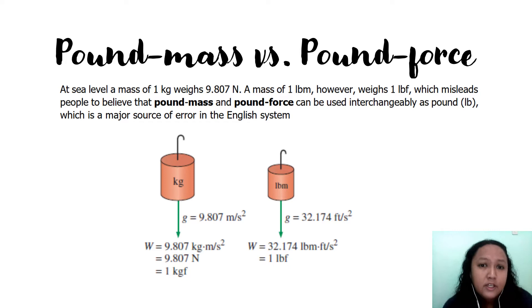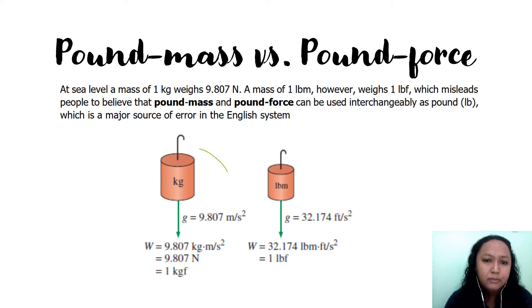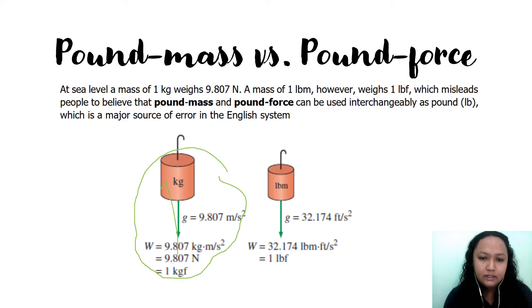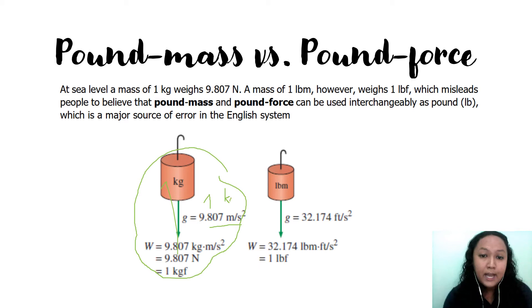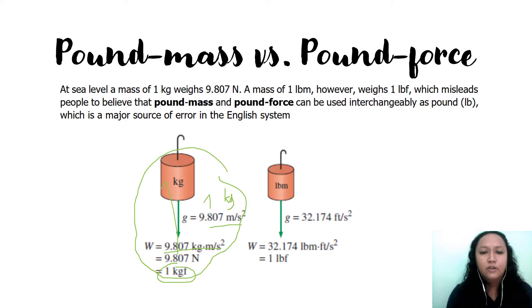This interchangeable use of pound-mass and pound-force is a major error in the English system. For example: 1 kilogram times 9.81 gives 9.81 kilogram-meters per second squared, which equals 9.81 newtons. This is also the equivalent of 1 kilogram-force (kgf). Note that kilogram-force (kgf) is different from kilogram-mass.